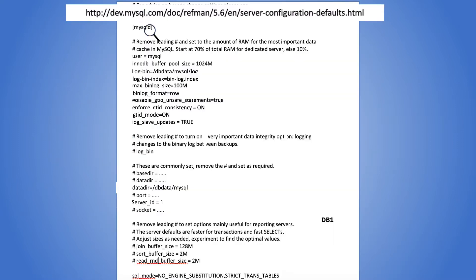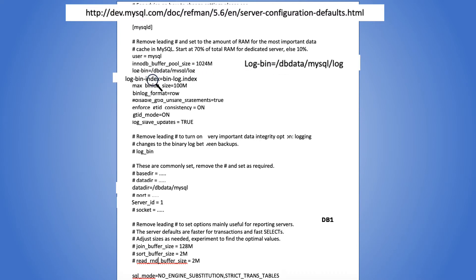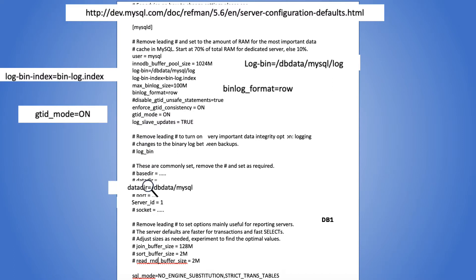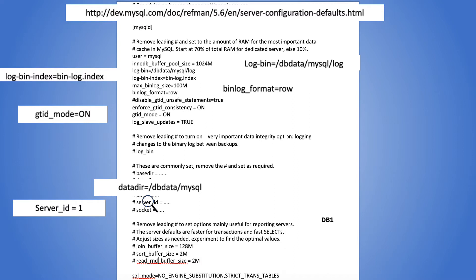Let's look at the typical My.cnf file. Refer to this link to know more about changing the server defaults. To change the defaults, uncomment the respective line and add an appropriate value. As we will see later in this video, some of the defaults that we would want to change are log bin folder, index file name, log format, data directory, server ID, etc.